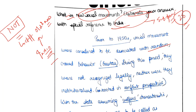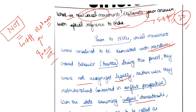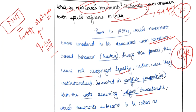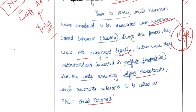Now let's look at the answer. The introduction states that prior to 1950, social movements were considered to be associated with random crowd behavior, and were not regularly recognized, and that with the state assuming welfare characteristics, social movements came to be called new social movements. This is not quite a good introduction because it does not help us understand what new social movement is and how it actually arose. A major feature of old social movements was their affiliation or association with political parties.